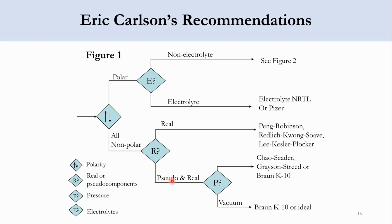If the system contains both pseudo and real components, we check the pressure. If it is above ambient, we use Chao-Seader, Grayson-Streed, or BK10. If it is a vacuum system, we use BK10 or the ideal model. So for non-polar systems, the key split is real-only versus pseudo-and-real, then pressure determines the specific model choice.